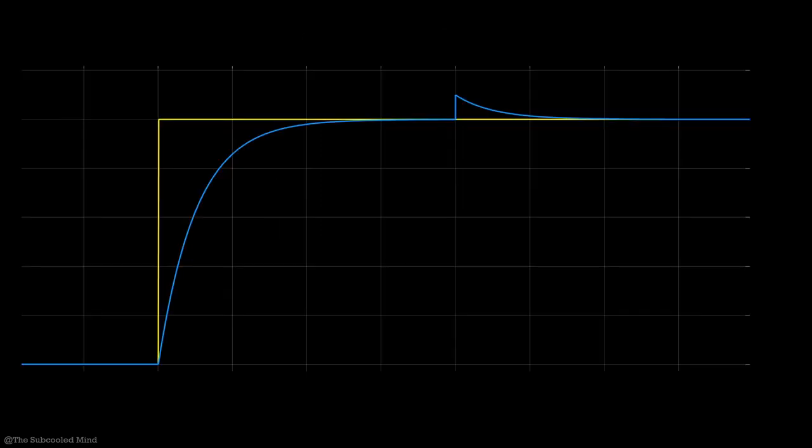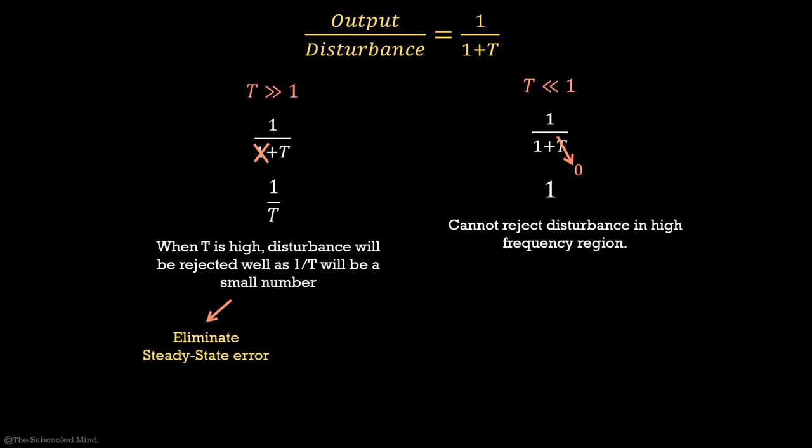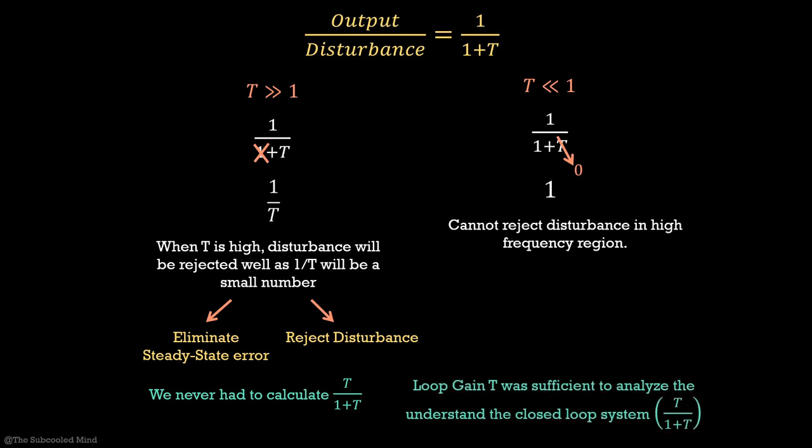Let us see this step response to understand it. These are the reference and the output signals. Over here, I have given a step disturbance and we are seeing how the output behaves. It takes time to reject this disturbance and settle back to the original value and this time is decided by the bandwidth of the system. You must have noticed that we need high DC gain for two reasons. To eliminate steady state error and to reject low frequency disturbance. If you have observed, we never need to calculate the exact closed loop transfer function T upon 1 plus T. We can find out the characteristics of closed loop transfer function by looking at the loop gain T.